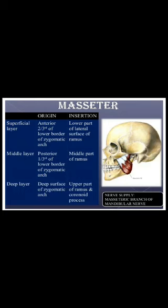Masseter — it comprises three layers: superficial, middle and deep. The superficial layer arises from the anterior two-thirds of the lower border of the zygomatic arch and is inserted to the lower part of the lateral surface of the ramus of the mandible. The middle layer arises from the posterior one-third of the lower border of the zygomatic arch and is inserted to the middle part of the ramus. The deep layer arises from the deep surface of the zygomatic arch and is inserted to the upper part of the ramus and coronoid process of the mandible. It is supplied by the masseteric branch of the mandibular nerve.